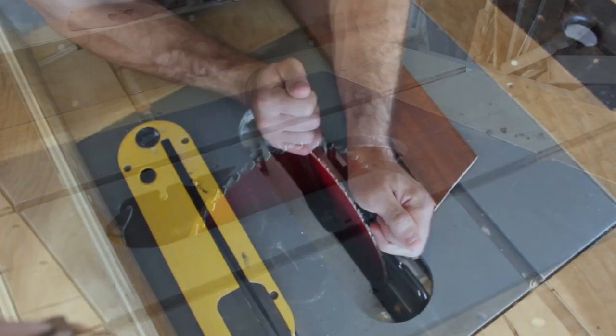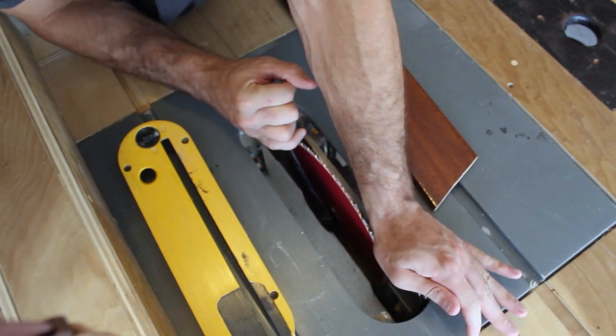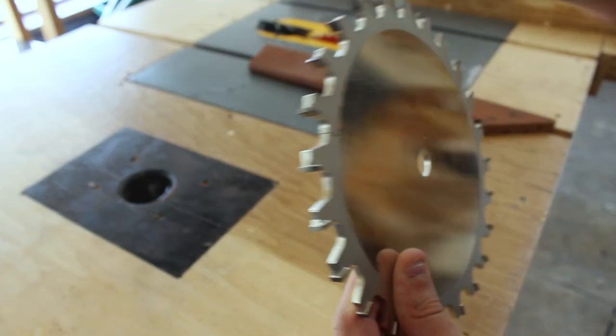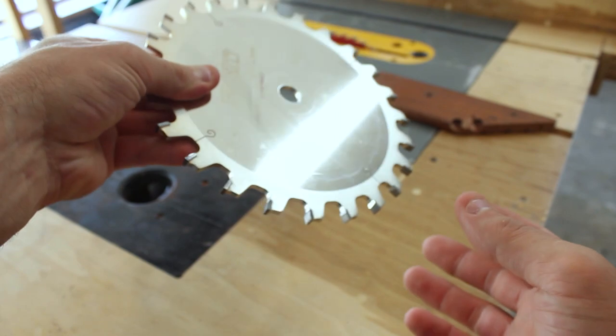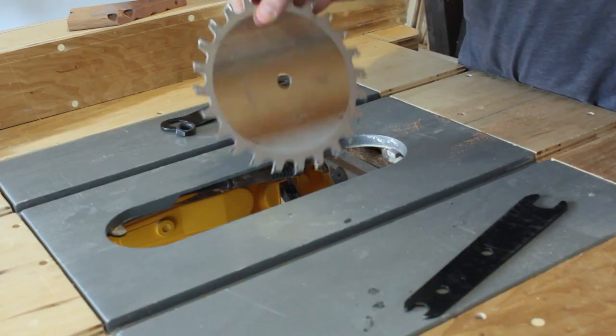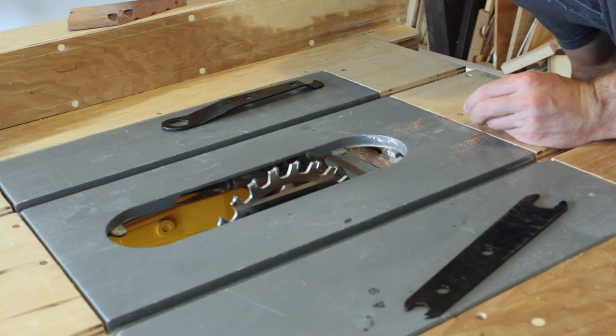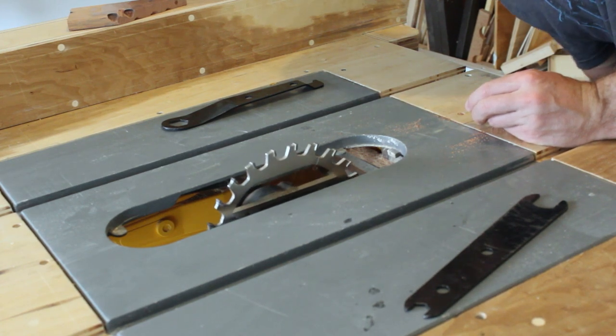Now I need to rip quarter inch grooves into the soap dishes. However, my table saw doesn't support dado blades, but what it can fit is this quarter inch infinity tool saw blade. It's a bit pricey, but it allows me to do quarter inch box joints and it makes it super convenient when you need to do quarter inch grooves or wider.